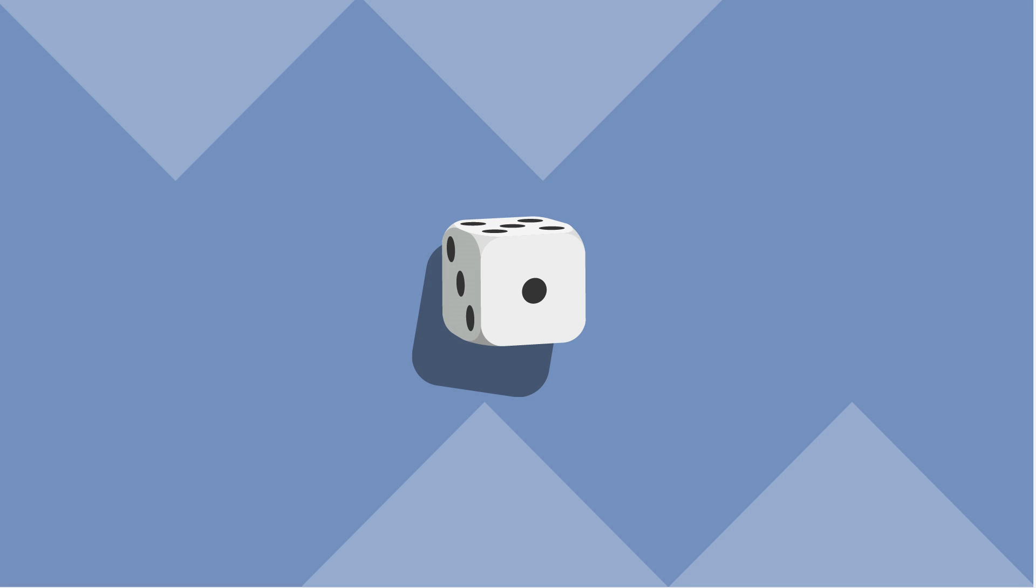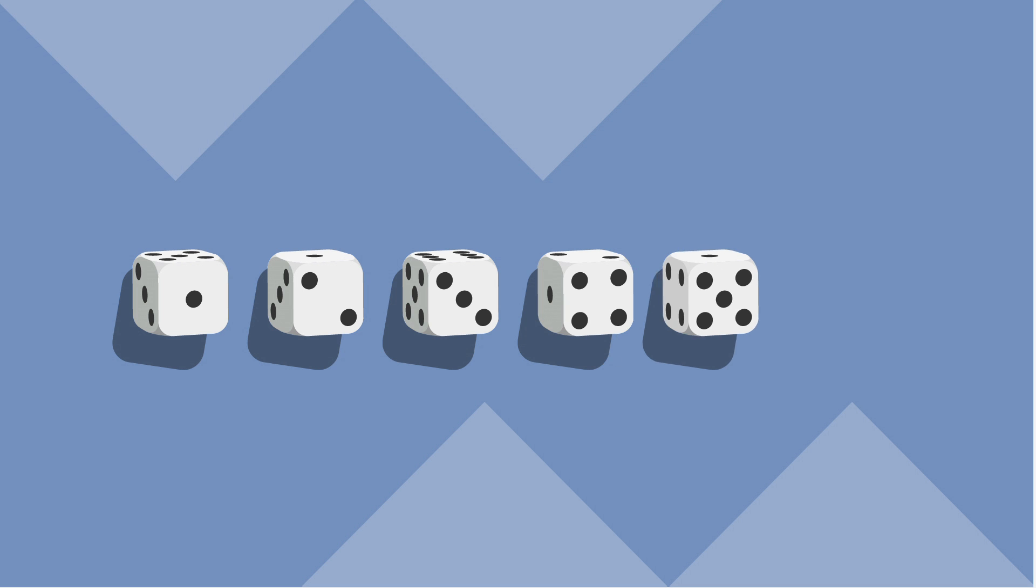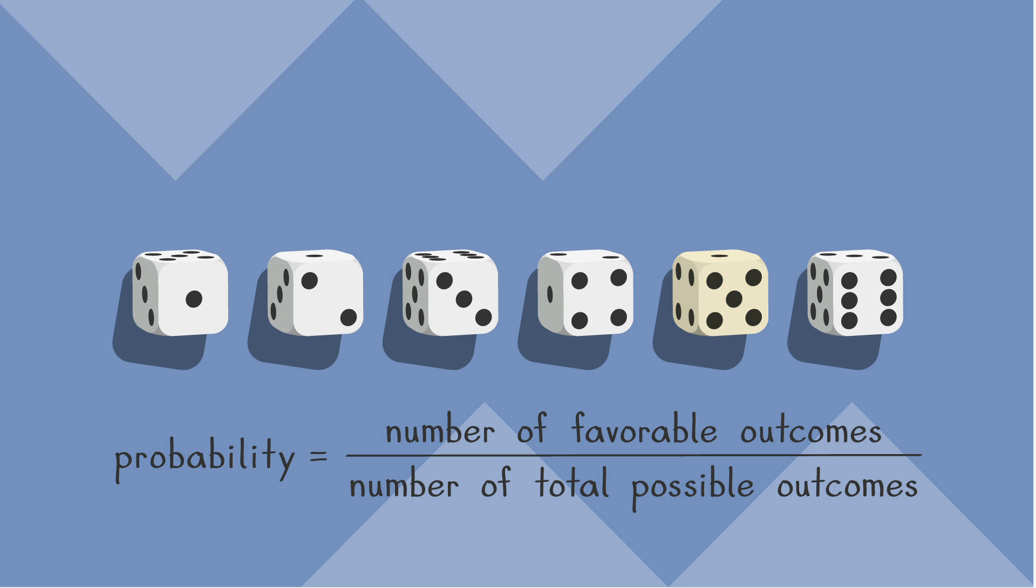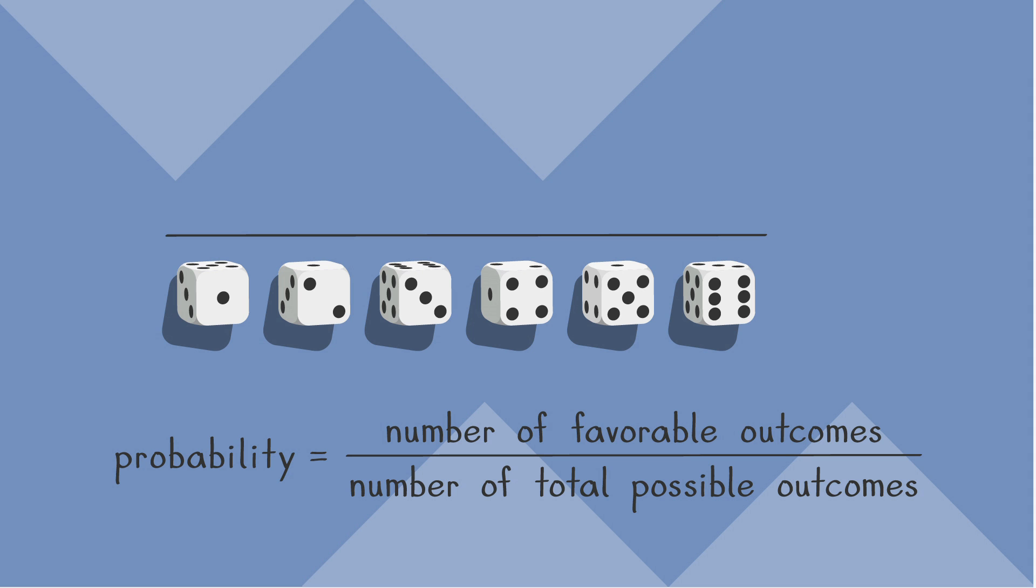Let's see how the probability formula works with a quick example. There are six sides on this die. If we roll the die one time, there are six possible outcomes: one, two, three, four, five, and six. If we wanted to know the probability of rolling a five, we could consult our probability formula and find that our number of total possible outcomes is six. And since we want to find the probability of only rolling a five, the number of favorable outcomes is one. So our probability is one over six.